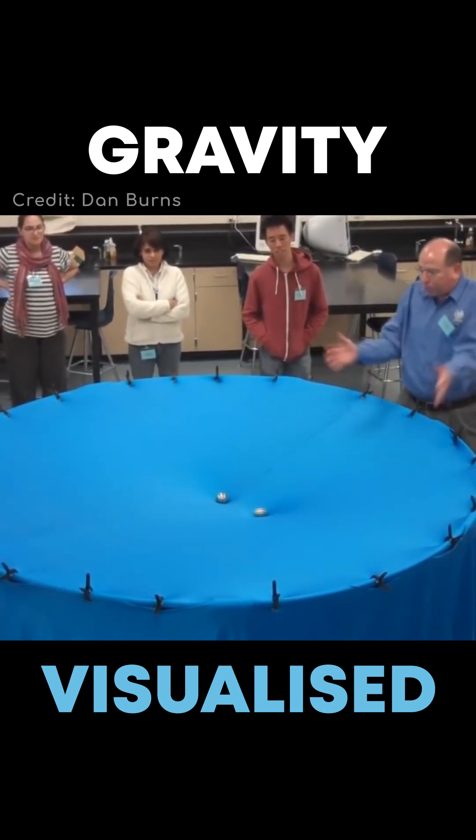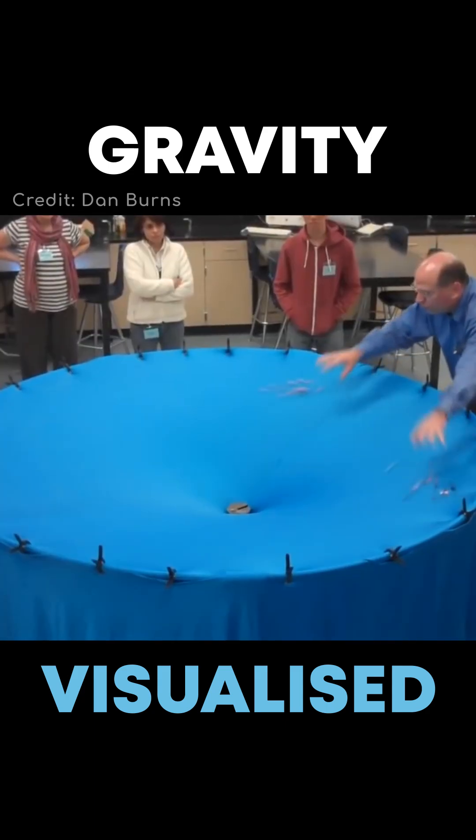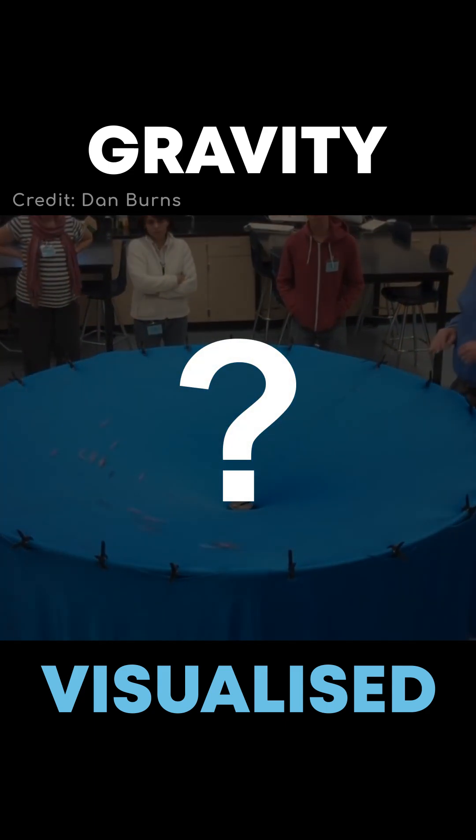This video by Dan Burns explains gravity in a visual way that's really elegant. What do you think is going to happen to the balls when the teacher drops them?